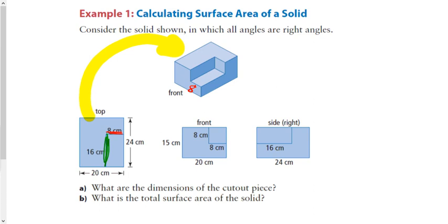I marked x as 16 in green. Finally, the blue measurement is z. If I look at the side profile and the front profile, this line here corresponds to this line here, which is also 8. So the dimensions of the missing cut-out part would be 8 by 16 by 8 — everyone good with that? Eight by sixteen by eight.